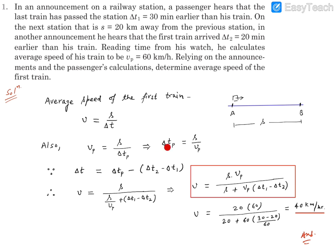From here we can find this Delta Tp which is going to be S divided by Vp. We know S, we know Vp, so we can find this Delta Tp. Now here is the crux point to connect this equation: calculating this time Delta T.